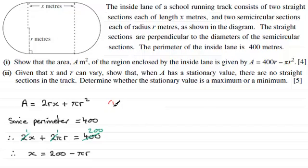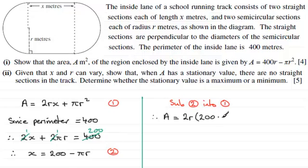And all I've got to do now is if we call that equation 1 and we call this equation 2, all I've got to do is substitute equation 2 into equation 1. So if we do that, what do we get? Well, we're going to therefore have A equals 2r multiplied by x, x being 200 minus πr. And then it's plus πr². So plus πr². And if we expand the brackets here, we're going to have 400r minus 2πr². And then we've got the plus πr² on the end. And simplifying this, we then end up with A equaling 400r minus πr².